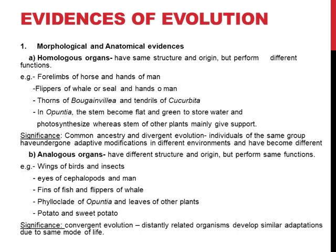The next one under morphological and anatomical evidences is analogous organs. Analogous organs have a different structural origin — in homologous organs they have the same structural origin, but here in analogous organs they have different structure and origin — but they perform the same function. Just the opposite of what homologous organs show: different structure and origin, but the same function.